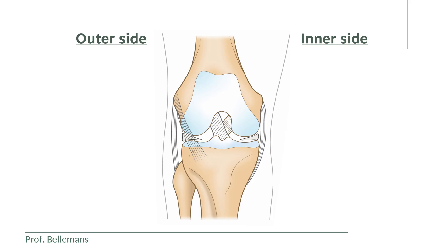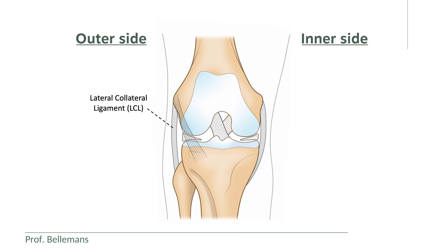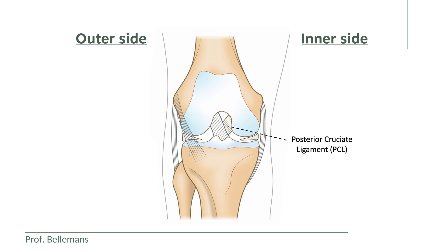There are five important ligaments that stabilize the knee: the medial collateral ligament, also called the MCL, on the medial or inner side of the knee; the lateral collateral ligament, or LCL, on the outer side of the knee; the anterior cruciate ligament, or ACL; the posterior cruciate ligament, or PCL; and the anterolateral ligament, or ALL.